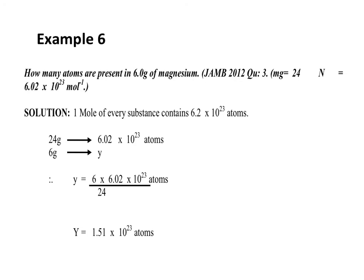Example 6. How many atoms are present in 6.0 grams of magnesium? Magnesium has an atomic mass of 24. The Avogadro number is 6.02 × 10²³ per mole. One mole of magnesium is 24 grams and contains 6.02 × 10²³ atoms. 6 grams of magnesium contain Y, where Y equals 6 times 6.02 × 10²³ all over 24, which equals 1.51 × 10²³ atoms.